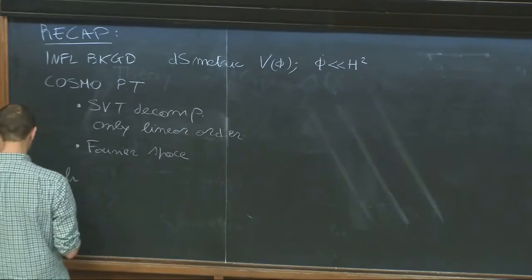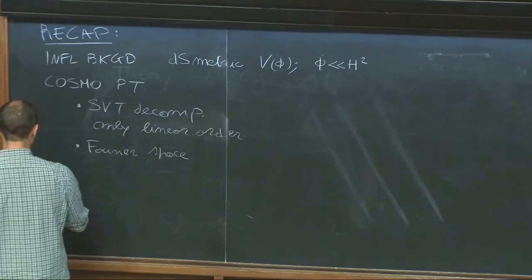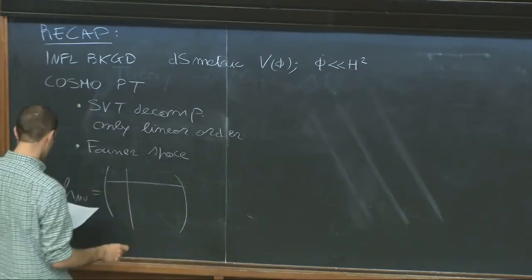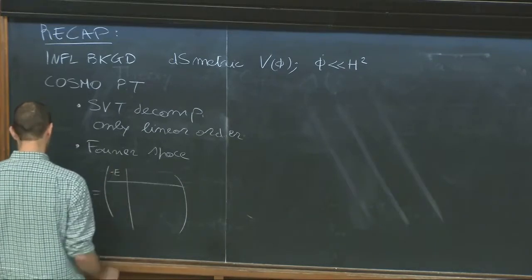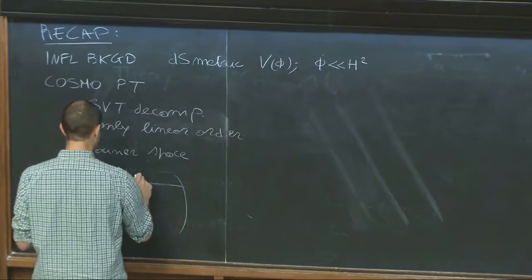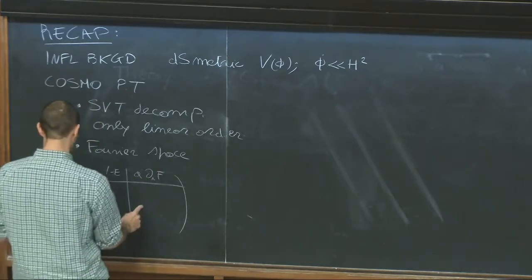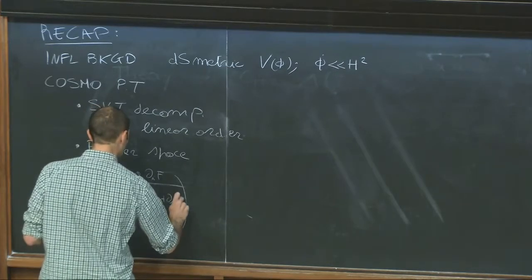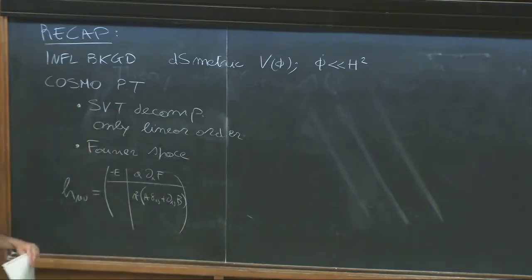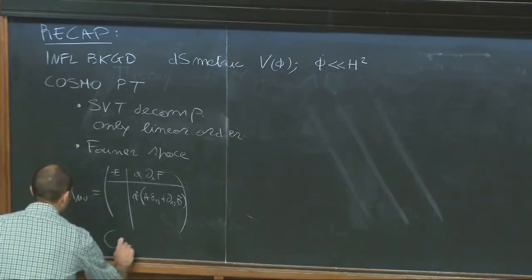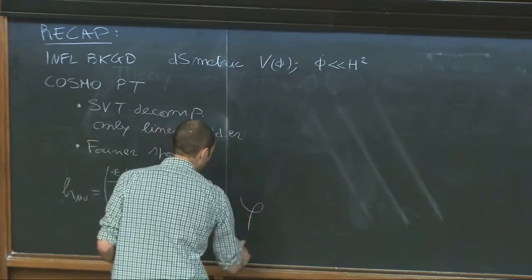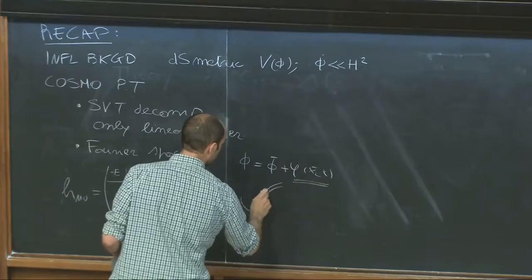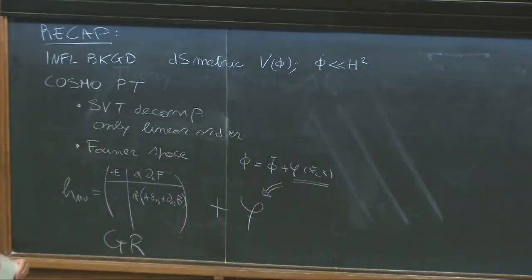The metric perturbations have four scalars under spatial rotation. There was one in the 00 component that I was calling minus E, another one in the 0I component that I was calling ∂_i F, and finally two in the spatial component: a² A δ_{ij} plus ∂_i ∂_j B. That's one, two, three, four scalars — this is as far as GR is concerned. And then we have a scalar field, so there are also perturbations to the scalar field. My notation is that there is some background, and the perturbation is what we are studying. So we have a total of five scalar fields.